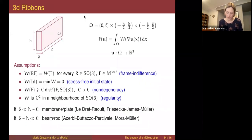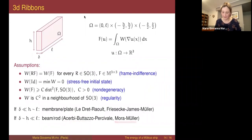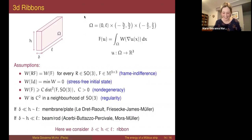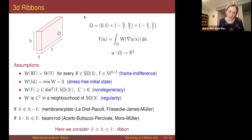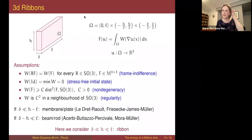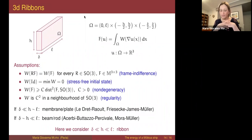If instead the length is order one and both the thickness and width go to zero with the same order, you model a beam or rod, and you can also deduce a hierarchy of models. This was done for the regime corresponding to the Ledret-Raoult case by Acerbi, Buttazzo, and Percivale, while the higher scalings were done by Stefan Müller and myself about twenty years ago. What I want to consider here is the case of ribbons — where both δ and h go to zero but at different speeds.